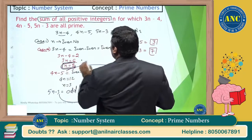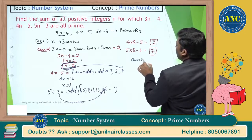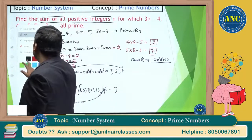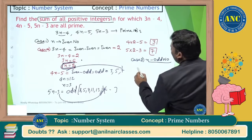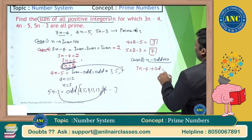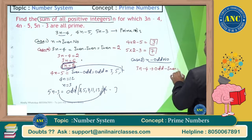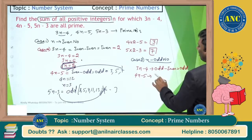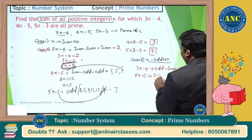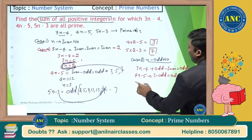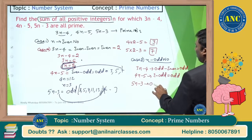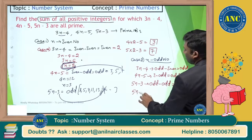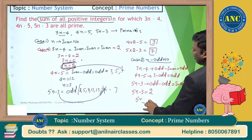So from Case 1 (n even), only n=2 works. Case 2: n is an odd number. If n is odd, 3n minus 4 = odd minus even = odd. 4n minus 5 = even minus odd = odd. But 5n minus 3 = odd minus odd = even. The only even prime is 2.